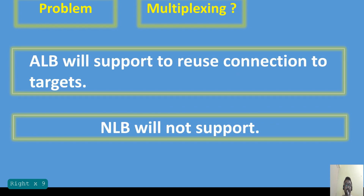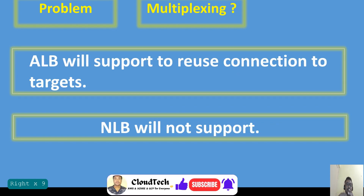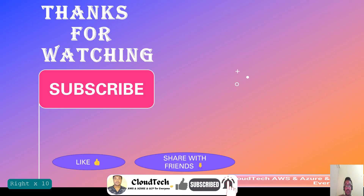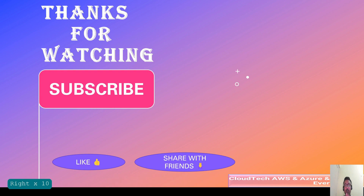One more problem is multiplexing — if you want to reuse your connections or requests. The Network Load Balancer does not support connection reuse; it will always be a fresh connection. So if you are planning to use multiplexing, ALB is the good choice. Those are all the key differences between ALB and NLB.